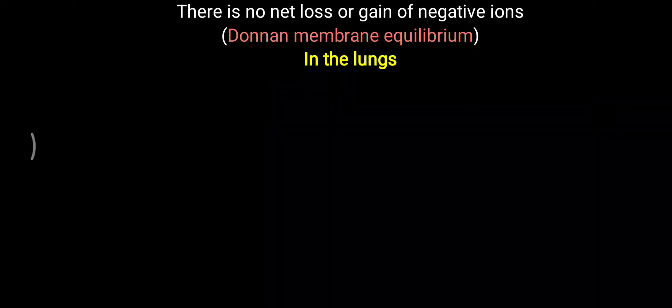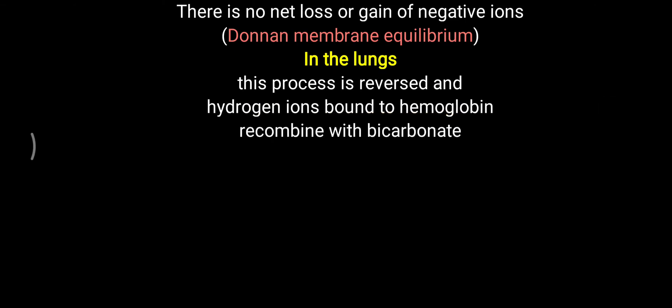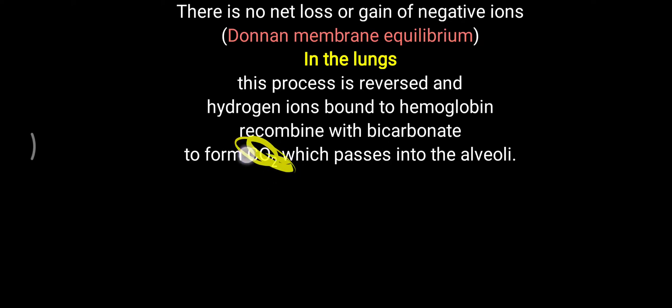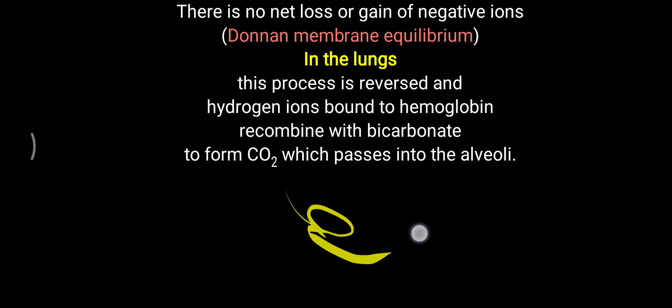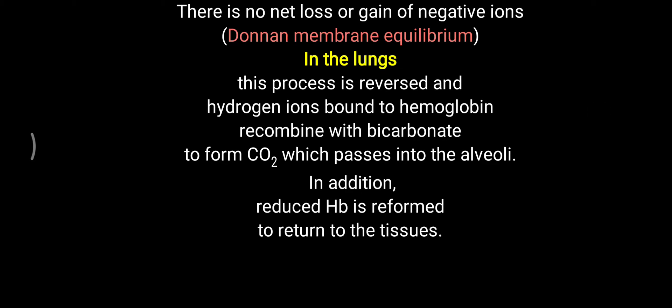At the lung level, when the RBC arrives, the whole process is reversed. Hydrogen, which was combined with hemoglobin as HHb, is removed and combines with bicarbonate ion (HCO3-). This forms carbonic acid (H2CO3), which is again broken down to produce carbon dioxide and a water molecule. This carbon dioxide passes into the alveoli and is eliminated from the body. So carbon dioxide that entered the red blood cell as a metabolic product is ultimately expelled out through the alveoli.